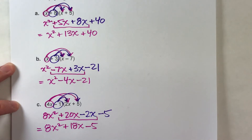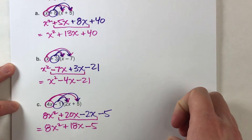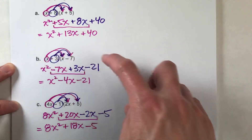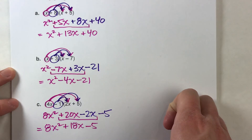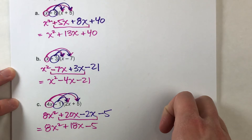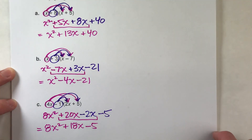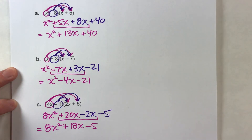So that's how you multiply two binomials. Just make sure you get every single combination when you're multiplying it out. I do recommend drawing little arrows to remind yourself which combinations you've done already — it keeps track of things visually and makes sure you don't skip anything. I hope you found this video helpful. If you did, make sure you hit that like button and also subscribe. Good luck on your math and I will see you next time.